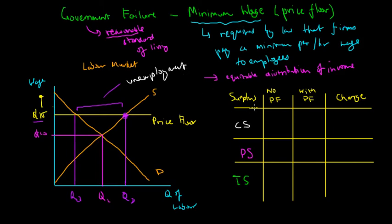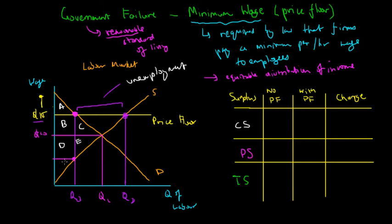Now let's apply cost-benefit analysis using consumer surplus, producer surplus, and total surplus. We separate the graph into labeled areas: A, B, and C above the equilibrium wage line, and D, E, and F below it. At the price floor of fifteen dollars, only a smaller quantity of labor is demanded, so we label further areas D, E, and F accordingly.